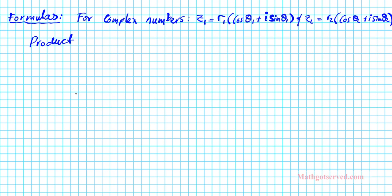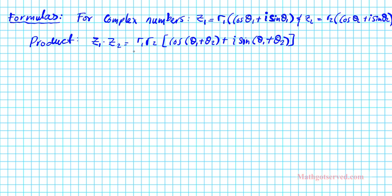For the product formula, the product expressed as z1 times z2 is given by r1 times r2, cosine(theta1 plus theta2) plus i sine(theta1 plus theta2). This formula is telling us that when multiplying two complex numbers in polar form, we simply multiply the radii and add the angles. That's how you find the product of complex numbers in polar form.